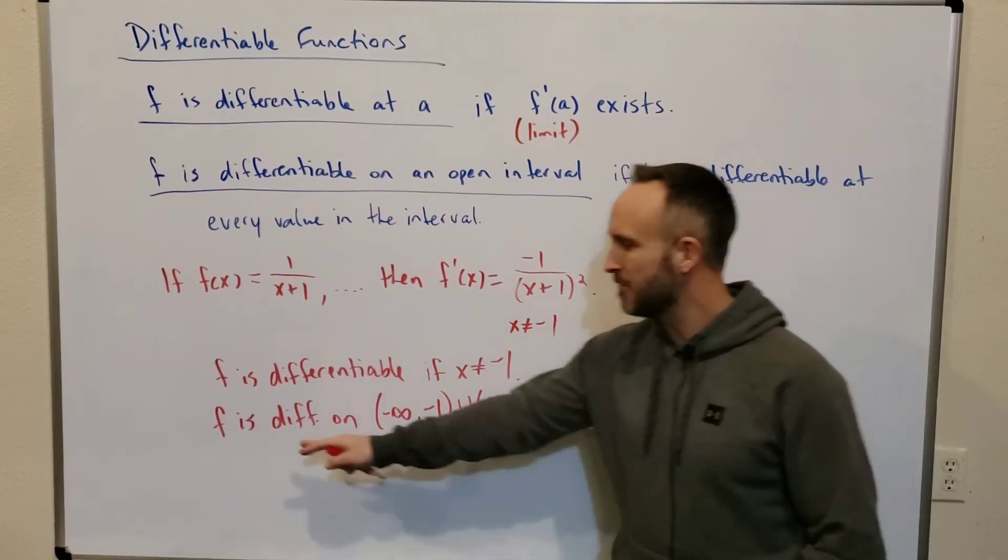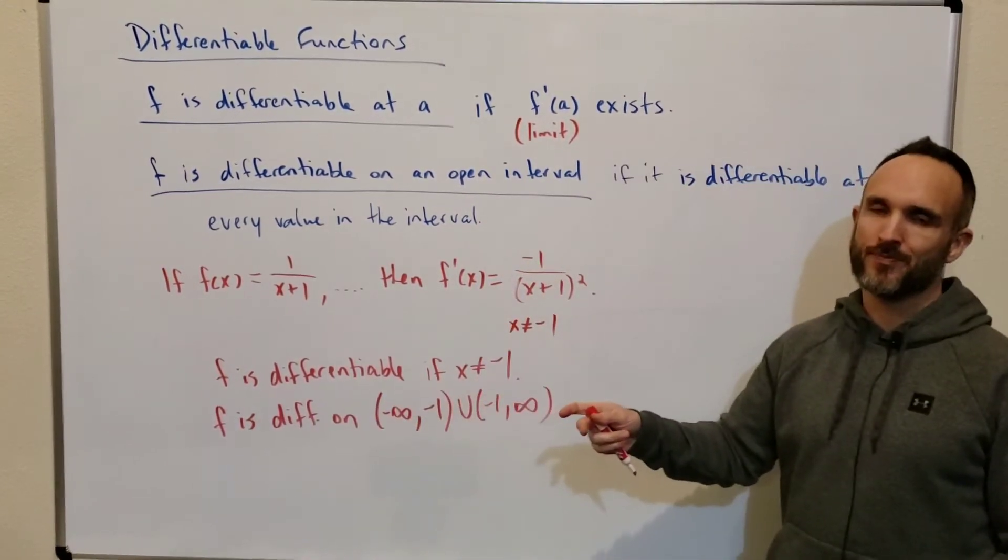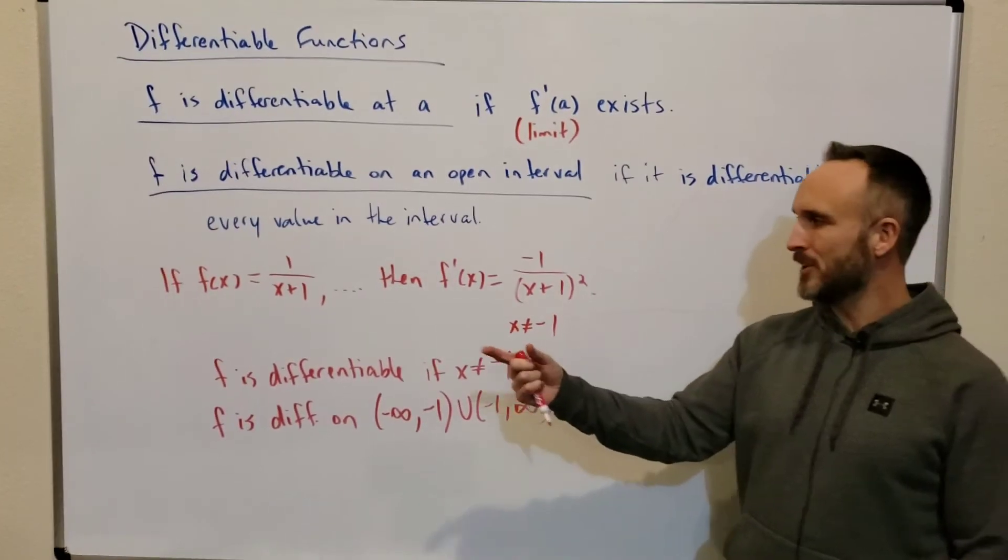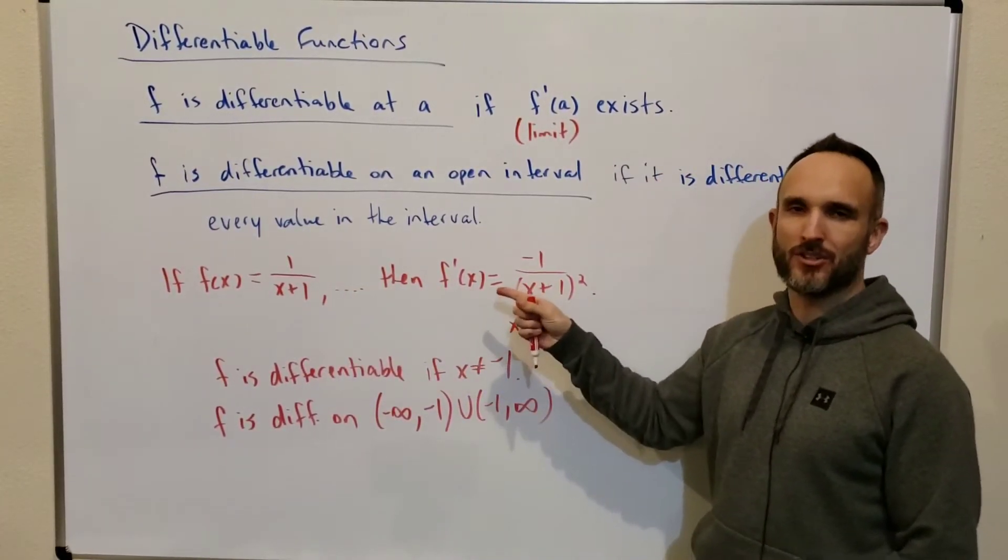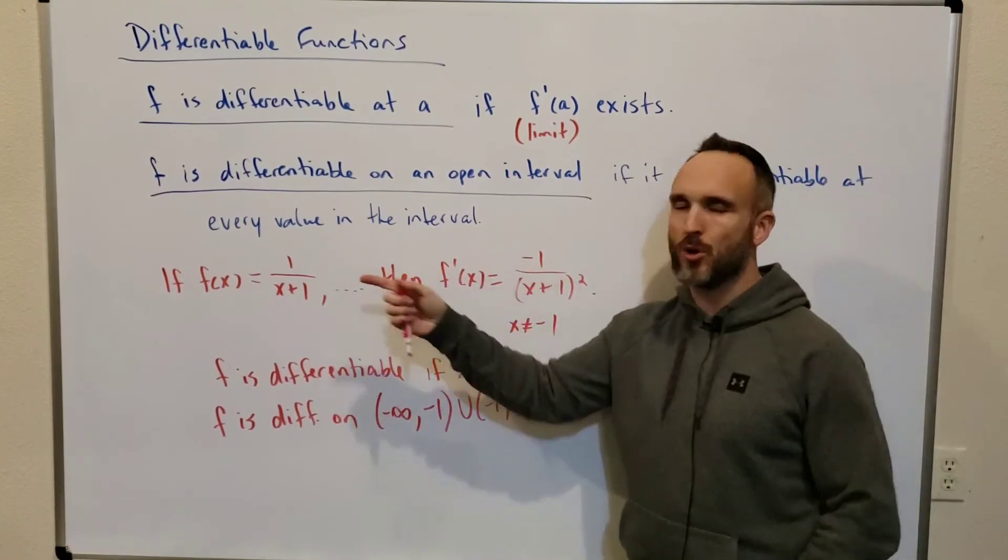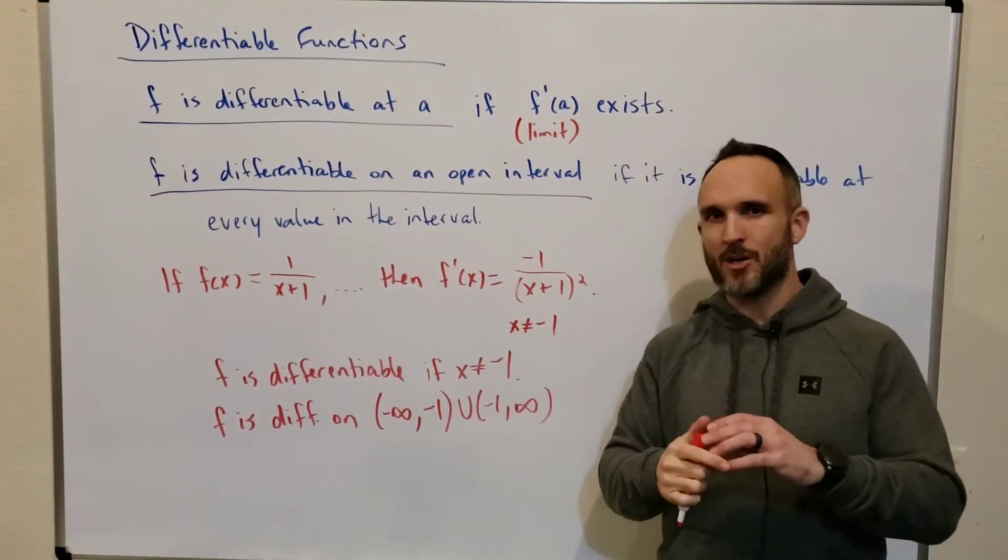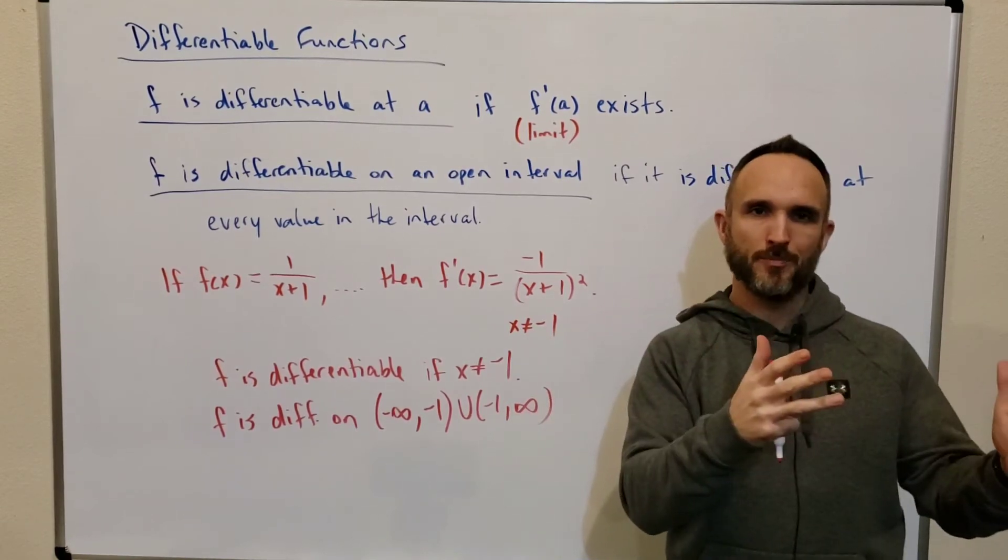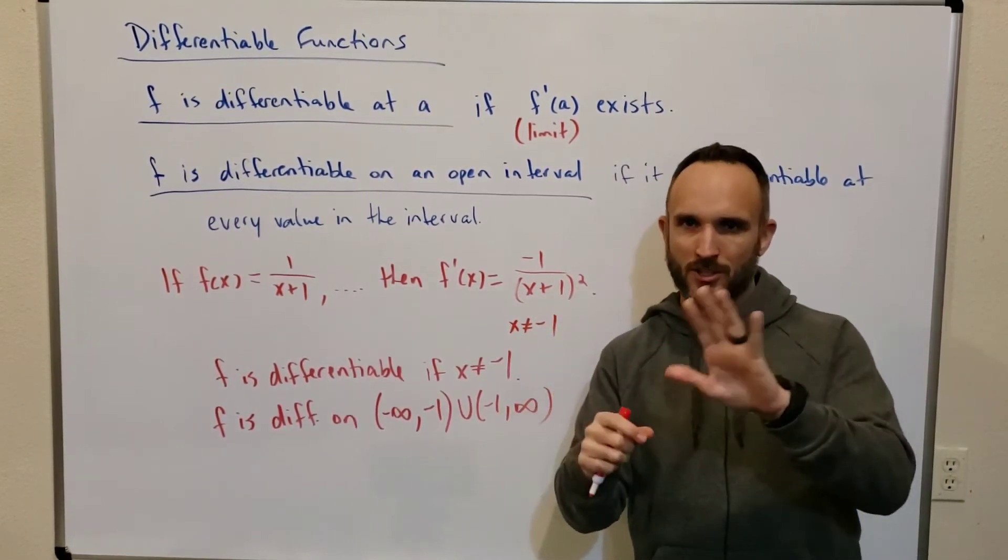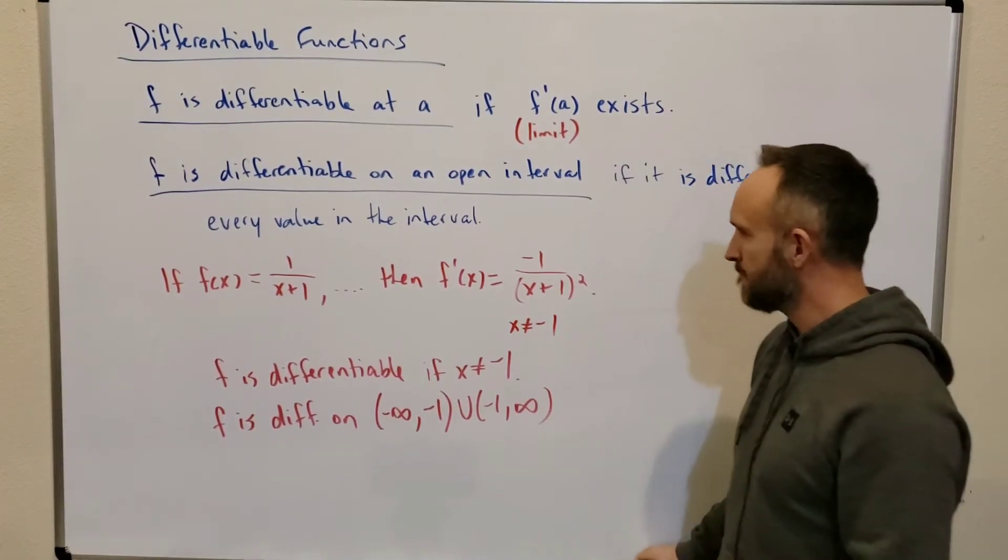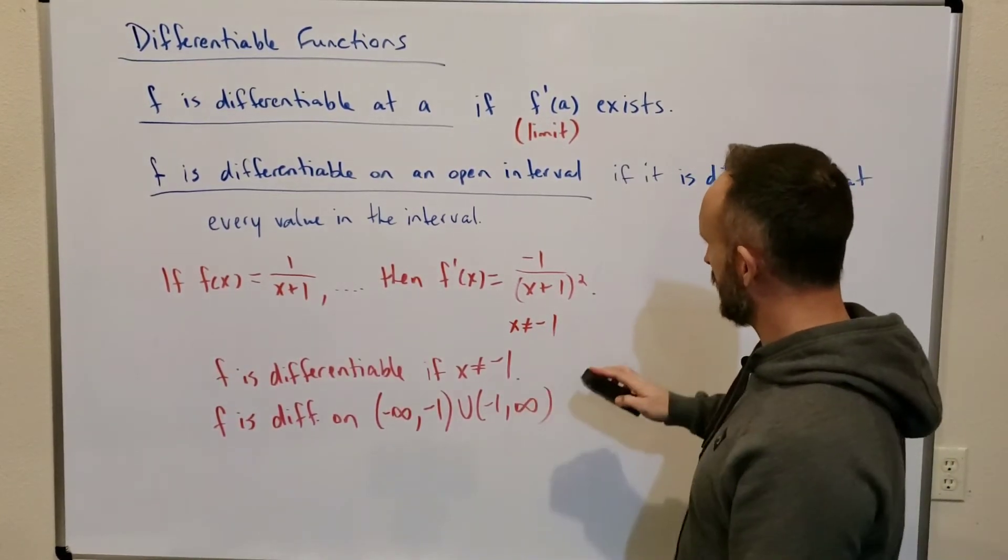So notice that I don't say f prime is differentiable. f is differentiable because of properties exhibited by the derivative of that function. So it's really important when you start learning this, when you start working with it, to really distinguish between f and f prime. If f prime exists, then f is differentiable. So make sure you get a handle on that. Let's try another one similar to this.